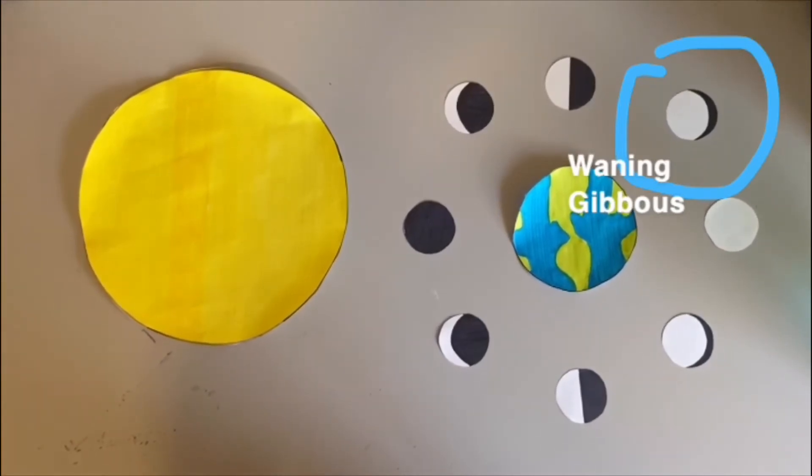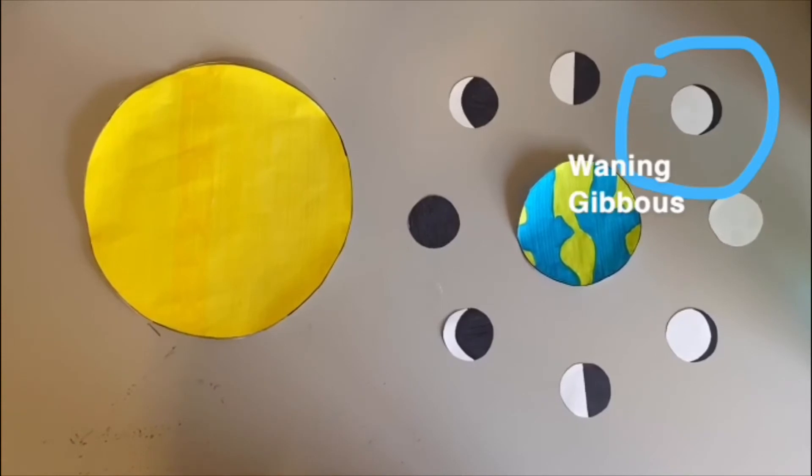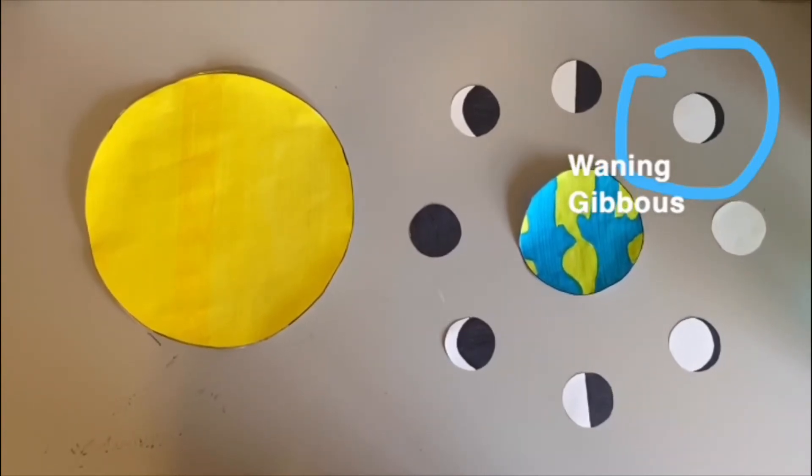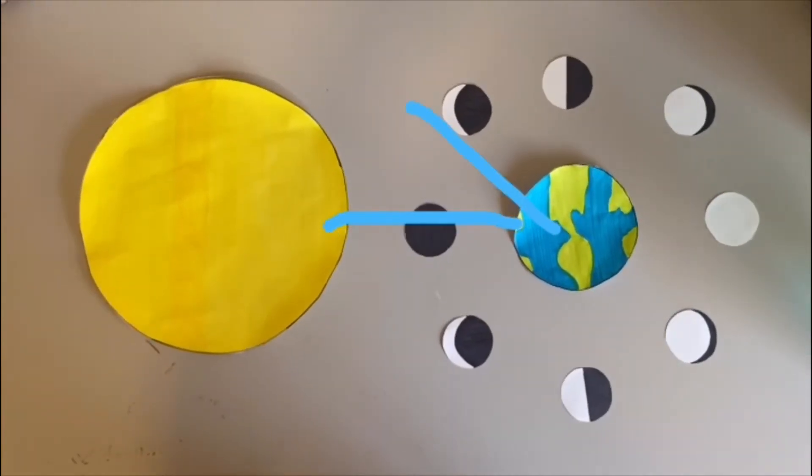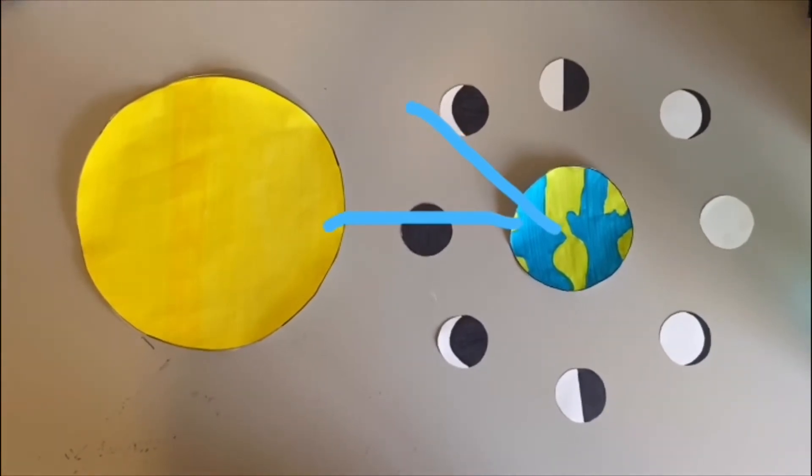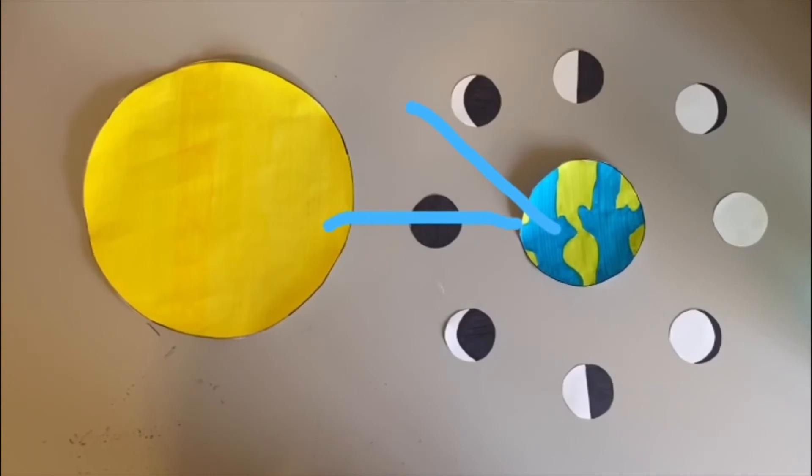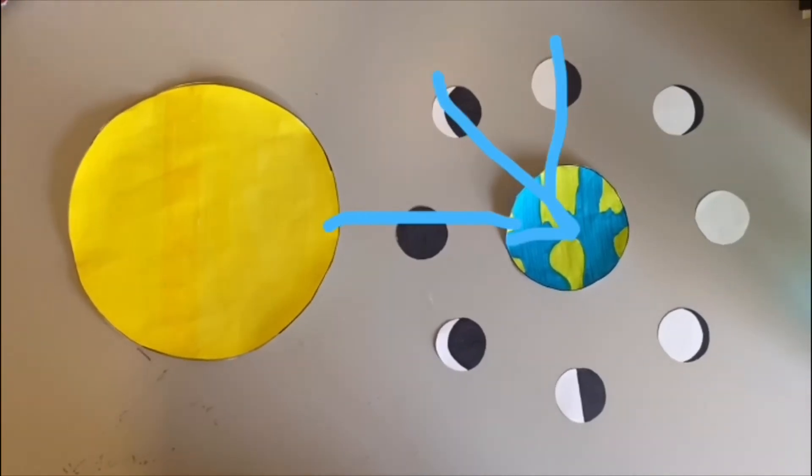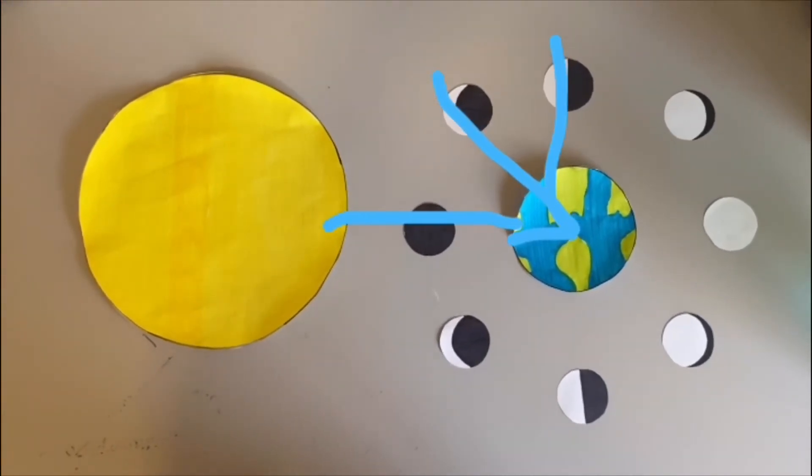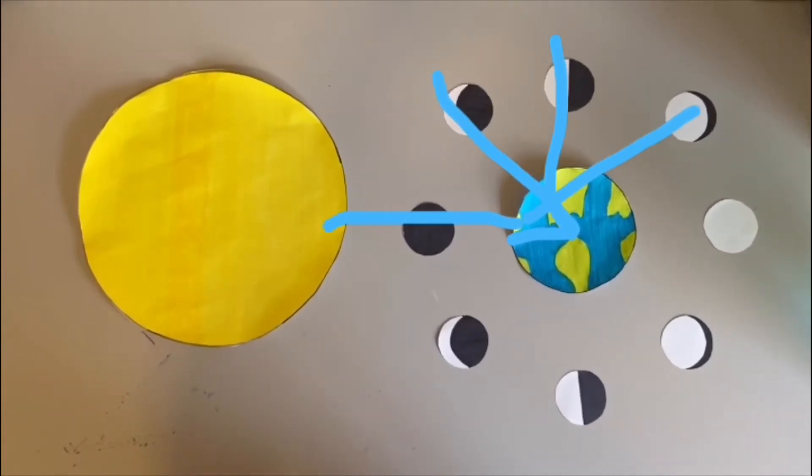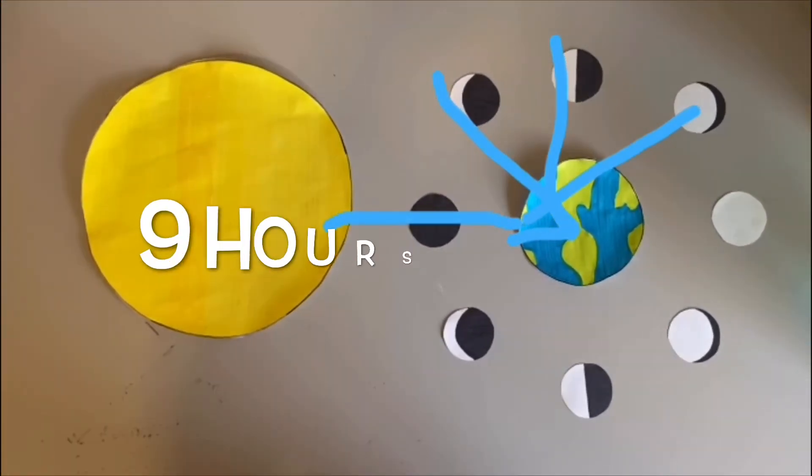Because we know what order our moon phases are in, we can clearly see how many hours the waning gibbous is going to be ahead of the sun. Each of the moon phases rise and set three hours after each other, so we can add up between the moon phases that are in between the waning gibbous and the sun. Between the new moon and the waning crescent is three hours, plus another three hours between the waning crescent and the third quarter, and then plus another three hours between the third quarter and the waning gibbous, which gives us a total of nine hours ahead.